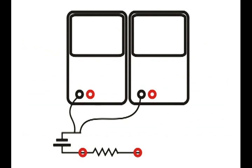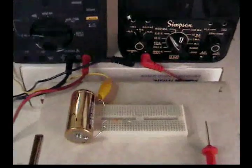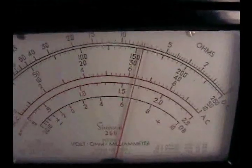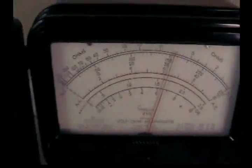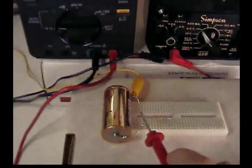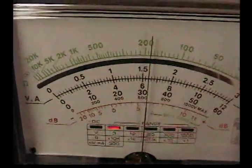This next experiment will show the advantage of a high impedance device over a low impedance device. I'm going to be using two meters. My signal source is a one and a half volt battery. I'm going to start with the Simpson and touch the source here. The meter reads a little over one and a half volts. Now I'll do the same for the high impedance meter. It reads the same, a little over one and a half volts.